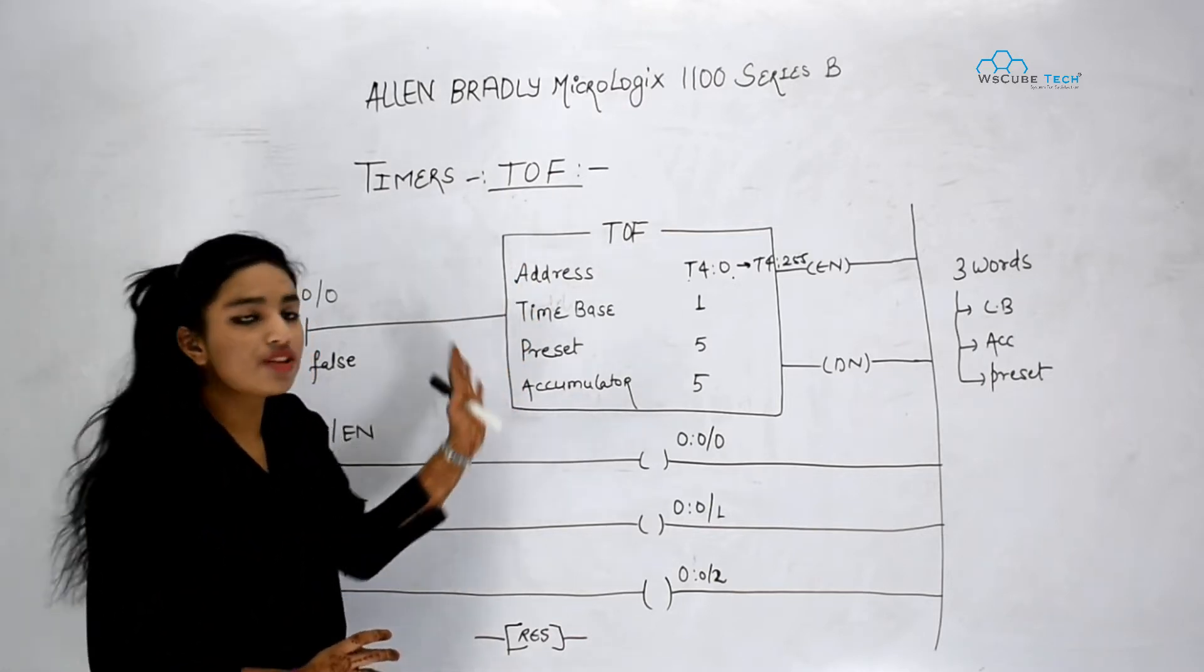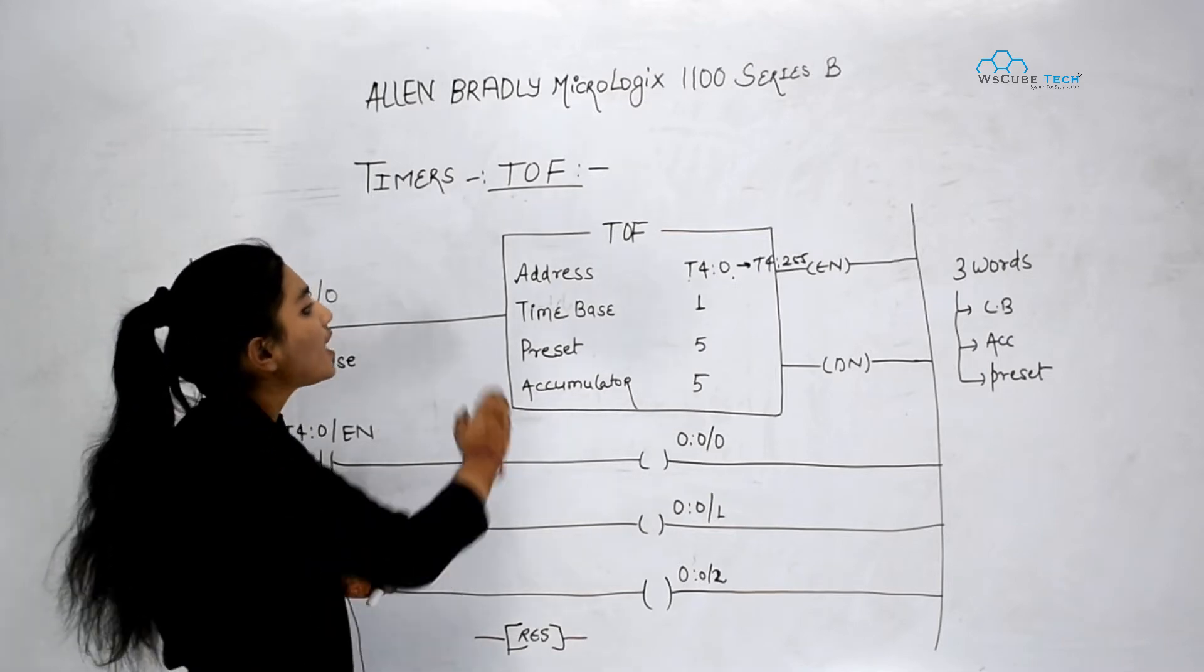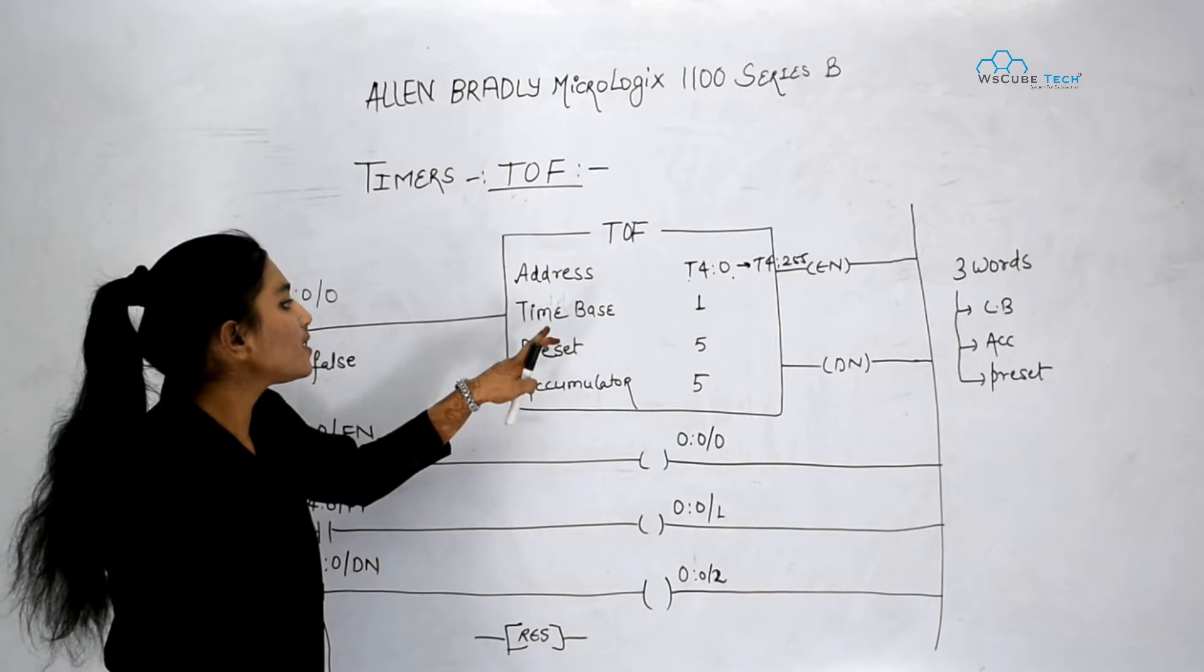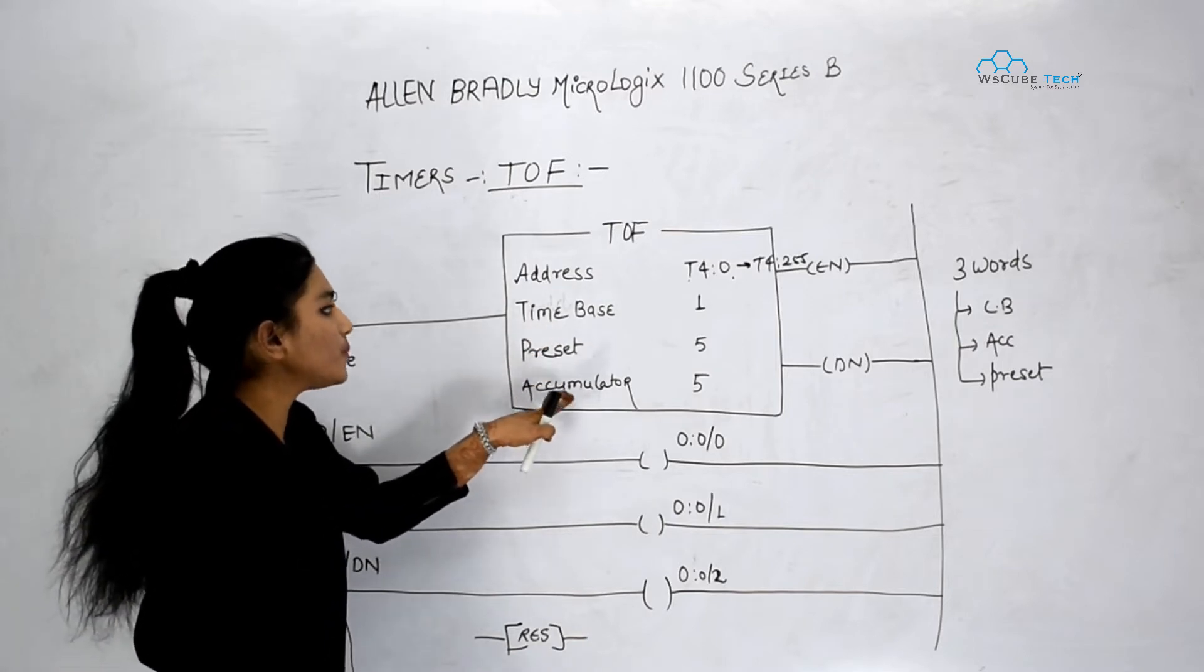So for that we have got TOF instruction and it looks like this. Here we have got four columns: Address, timebase, preset and accumulator.